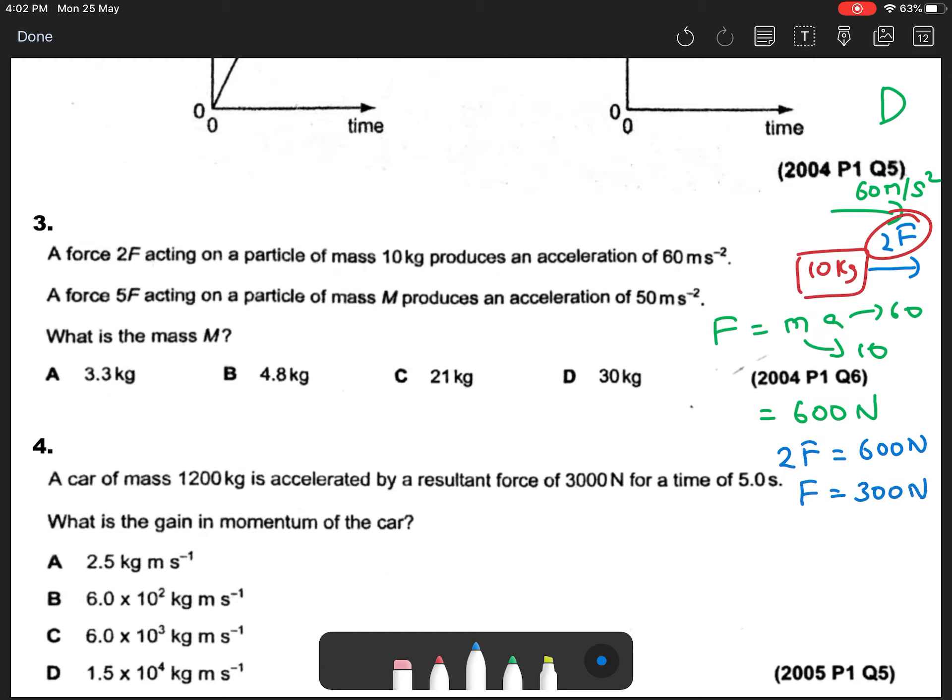Now it says a force 5F on a particle M produces an acceleration of 50 meters per second squared. What is the mass M? So now my resultant force is 5F. So 5 times 300 is 1500 Newtons.